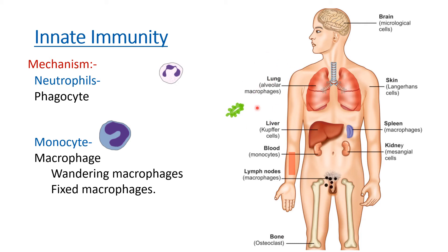Examples of fixed macrophages in specific tissues: in the lungs we have alveolar macrophages, in the liver we have Kupffer cells, in the blood we have monocytes, in the lymph nodes we have macrophages, in the bone we have osteoclasts, in the kidney we have mesangial cells, in the spleen macrophages, in the skin Langerhans cells, and in the brain microglial cells. All these fixed macrophages act as a defense barrier to pathogens entering that particular tissue.